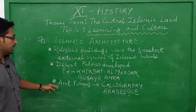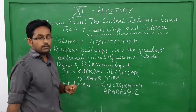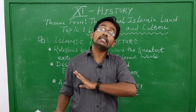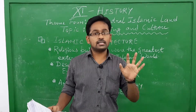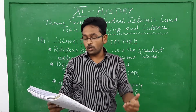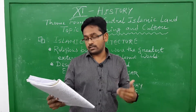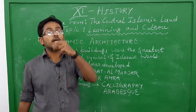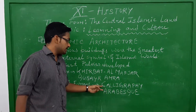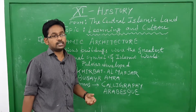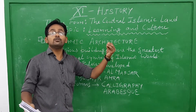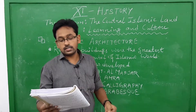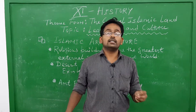A part of Islamic architecture is art forms. The portrait of living beings was completely rejected in Islamic religious art. Instead, Islam promoted two types of art forms: first, calligraphy — the art of beautiful handwriting — and second, Arabesque, which refers to geometric and vegetal designs.